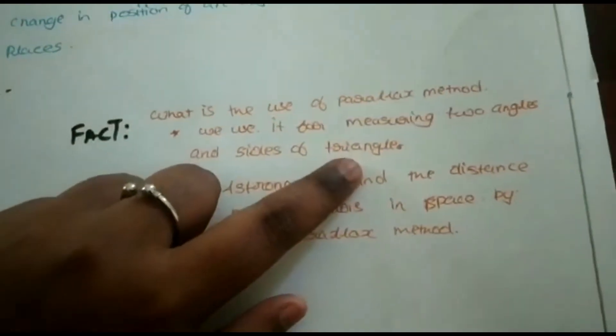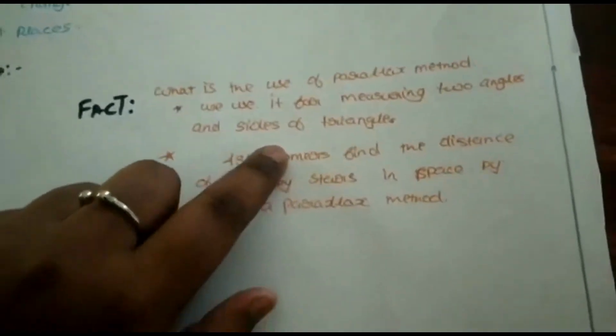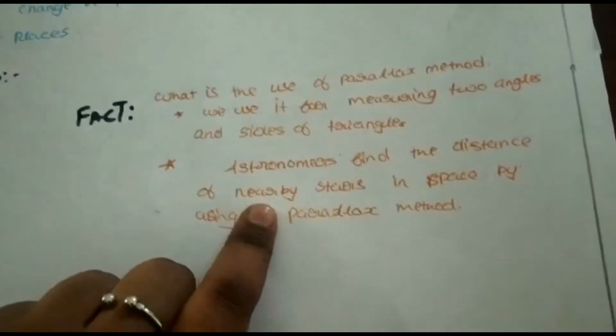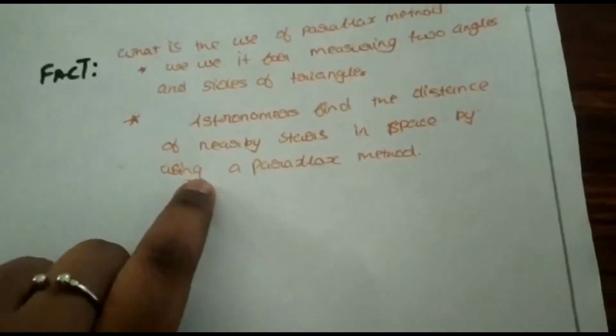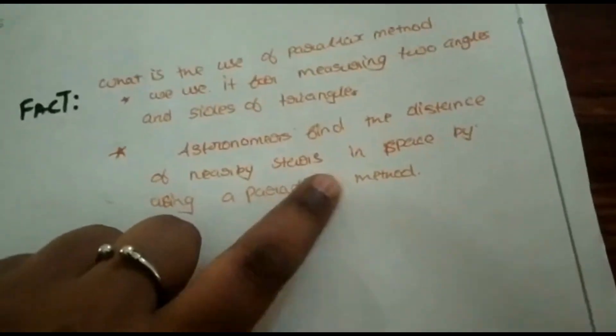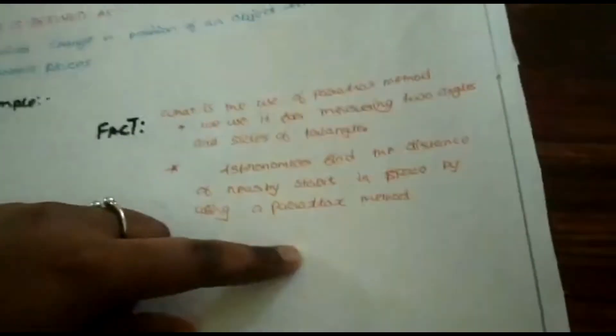We use it for measuring angles and the size of triangles. Students use it, and astronomers find the distance of nearby stars in space by using the parallax method.